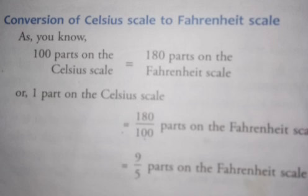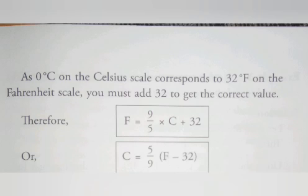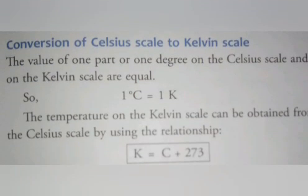We know very well 0 degree centigrade on the Celsius scale corresponds to 32 degree Fahrenheit on the Fahrenheit scale. So we add 32 to obtain the Fahrenheit scale value. We get the formula: F is equal to 9/5 into C plus 32, or after recalculation we get C is equal to 5/9 into bracket F minus 32. In this way we can calculate Fahrenheit scale value into Celsius scale value and Celsius scale value converted into Fahrenheit scale value.